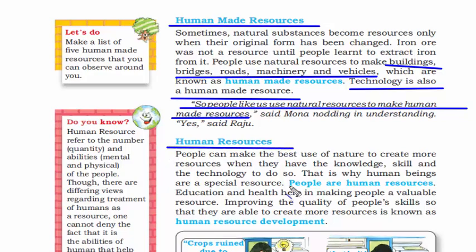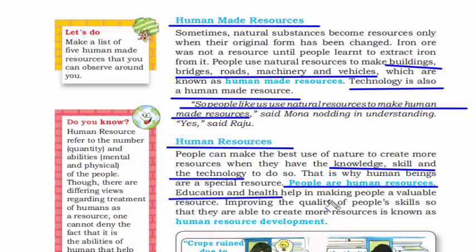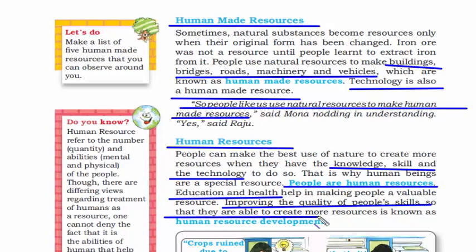This brings us to human resources. In this category, people themselves are the resource, because humans have the potential to multiply natural resources with the help of knowledge, skills, and technology. Education and health help in making people a valuable resource. Improving the quality of people's skills so they can create more resources is known as human resource development. Developed nations are ahead because of their high human development index — people there have much higher quality skills and more opportunities to grow.